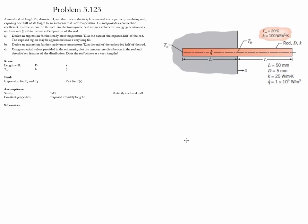Problem 3.123. In this problem we have a metal rod of length 2L, a given diameter, and a thermal conductivity. Half of this rod is inserted into a perfectly insulated wall and the other half is exposed to a constant convection coefficient air stream with constant temperature T infinity.